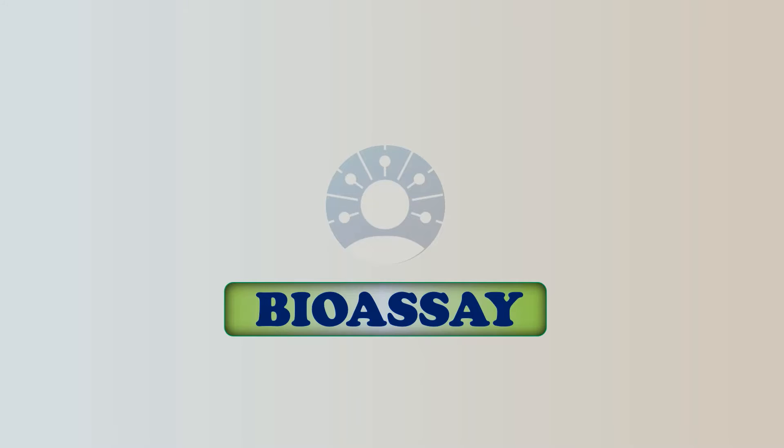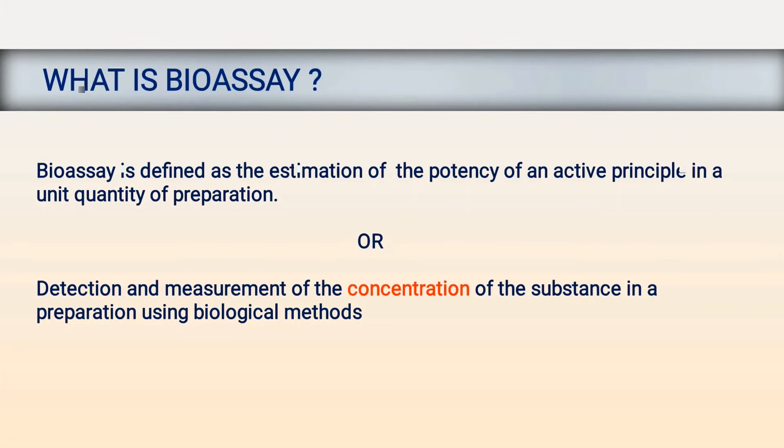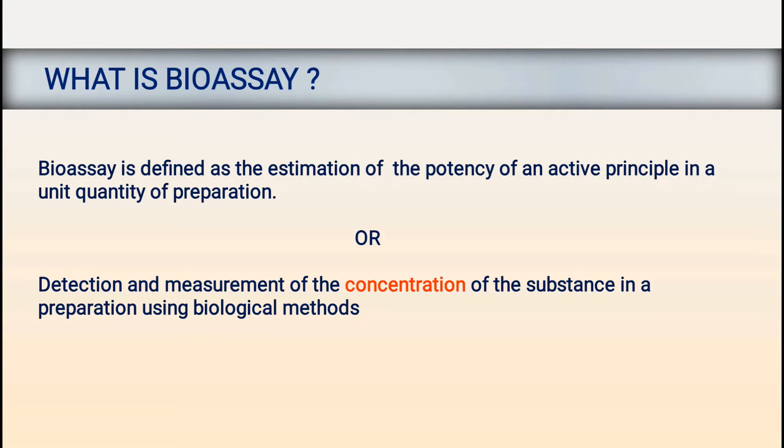So let's get started. Bioassay is defined as the estimation of potency of an active principle in a unit quantity of preparation. Potency is the amount of drug required to produce a desired effect. So the amount of drug required to produce a desired effect is estimated of an active principle in unit quantity of preparation.